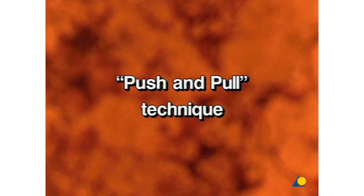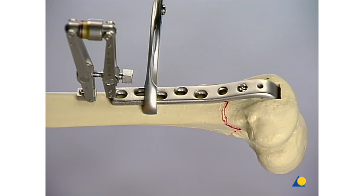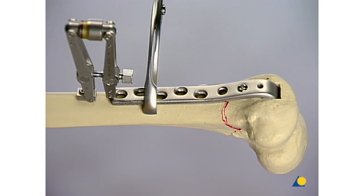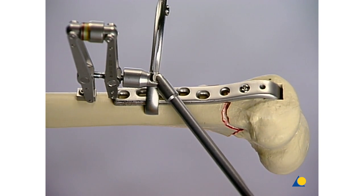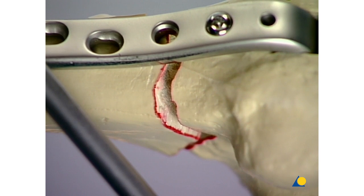Push and pull technique. For the fine adjustment of a simple fracture, the fragments are often distracted and then compressed. This can be achieved with the tension device or the bone spreader and the bone holding forceps. The tension device is fixed to the end of the plate with a monocortical screw, and the hook is hinged onto the end of the plate. The fracture is distracted by spreading the tension device.